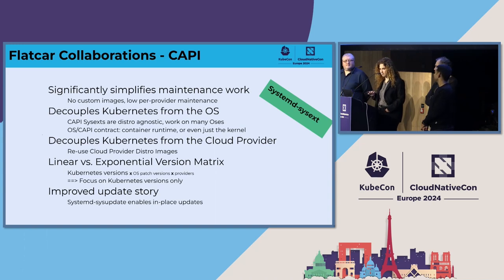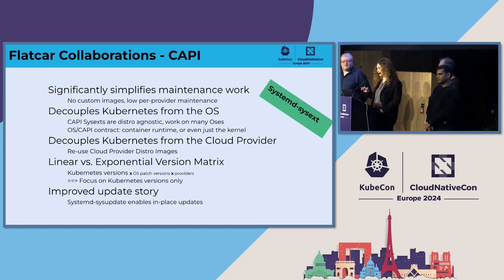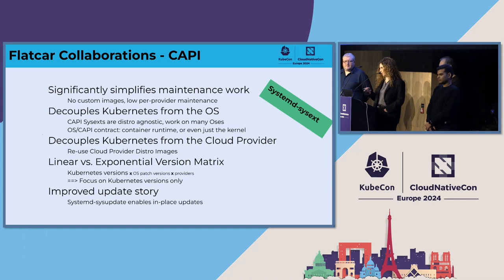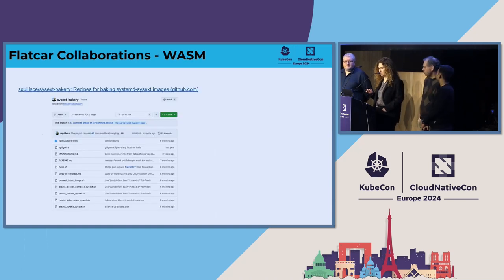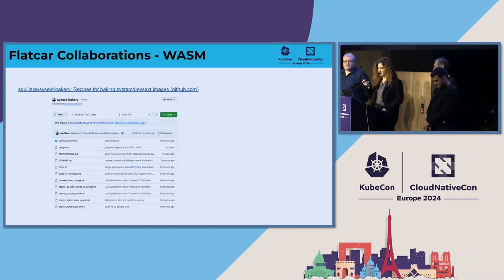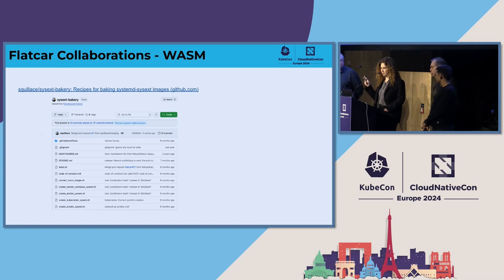This works well on Flatcar because it's an immutable operating system, and it requires /usr to be read-only. We collaborated upstream, and now systemd-sysext got a feature that allows operating systems that don't have a read-only /usr partition to also enjoy this functionality. That created an interesting story upstream with CAPI and systemd. Another story coming out of that with systemd-sysext is a collaboration with WASM — in the ignition declaration file, you can point to a link to pull the image and run whatever WASM distribution you want.